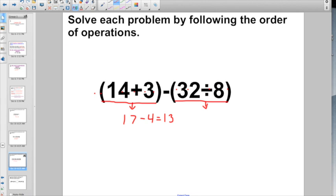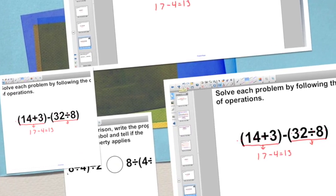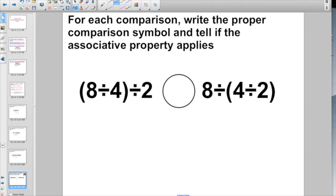Not too tough yet. Well, let's take a look at something just a little bit more. Here it says: for each comparison, write the proper comparison symbol and tell if the associative property applies. So hey, I got the same numbers here, Mr. Heinz. This has to be equal, right? Work it out. 8 divided by 4—8 divided by 4, that's 2. 2 divided by 2, hopefully you know, that's going to give me 1.